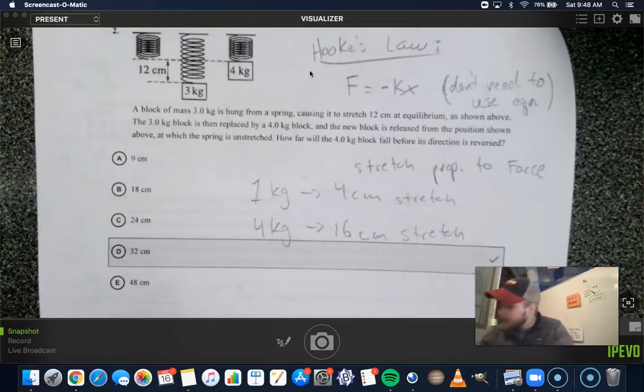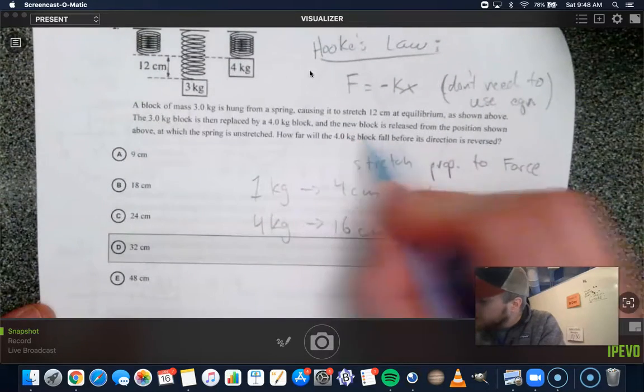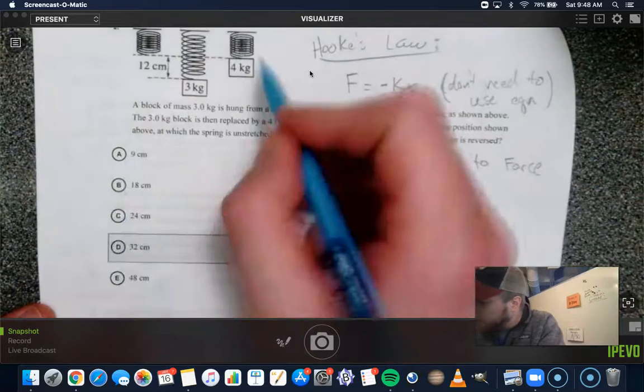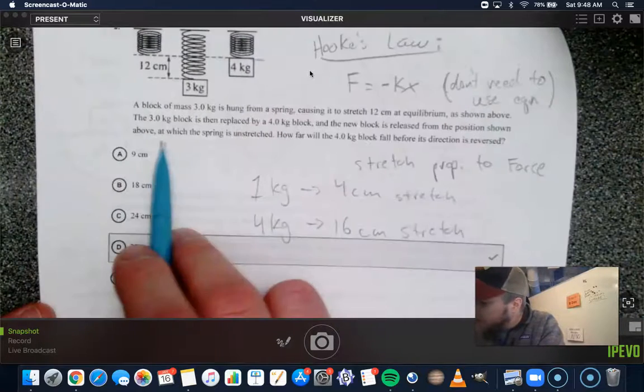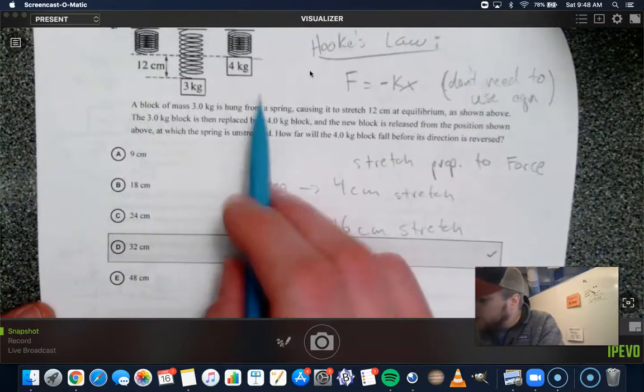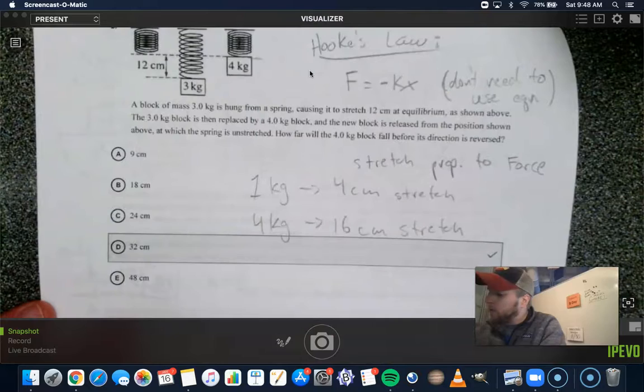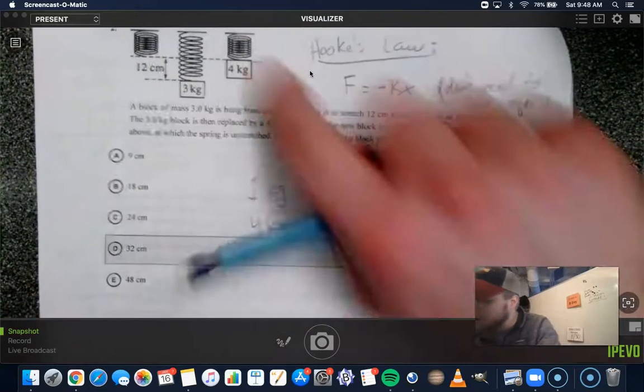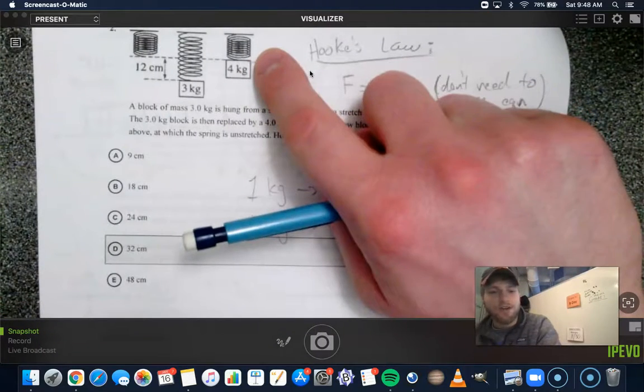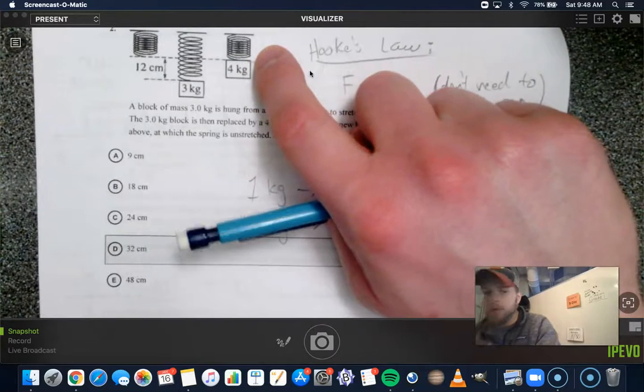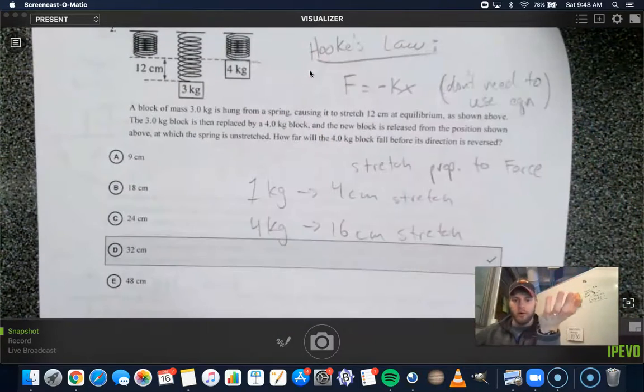Let's read the question carefully. It says the new block is released from the position shown above, so it's released from here at which the string is unstretched. So how far will it go as it falls? So keep in mind, at this moment, it has a bunch of potential energy.